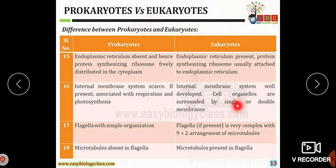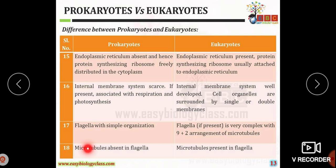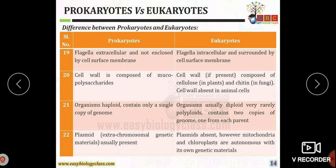The flagella of prokaryotic organisms are simple in organization, made up of flagellin protein, and lack microtubules. Eukaryotic flagella are complex with a 9+2 arrangement of microtubule proteins. Furthermore, prokaryotic flagella are extracellular and not enclosed by a cell surface membrane, whereas eukaryotic flagella are intracellular and surrounded by the cell surface membrane.